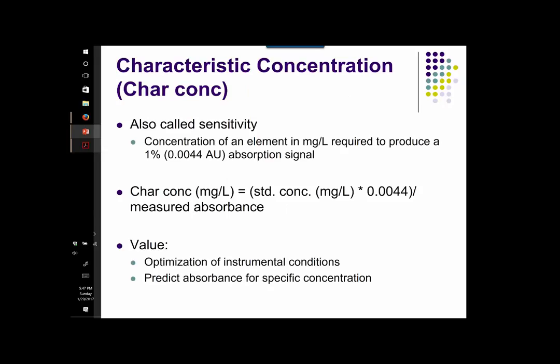In Flame AA and Graphite Furnace AA, there's a term — characteristic concentration — that's often used whenever we're speaking about sensitivity. By definition, characteristic concentration is the concentration of your analyte, expressed in parts per million, that is required to produce an atomic absorption signal corresponding to 0.0044 absorbance units. This value is used to predict sample absorbances for samples with specific concentrations, and it's also used to guide the optimization of experimental conditions when using standard assays.